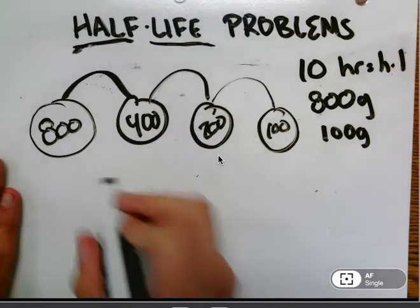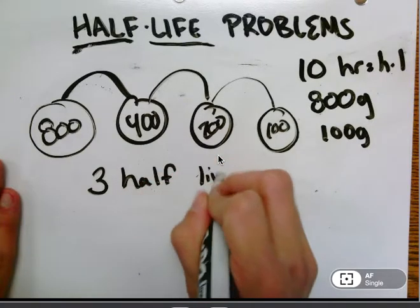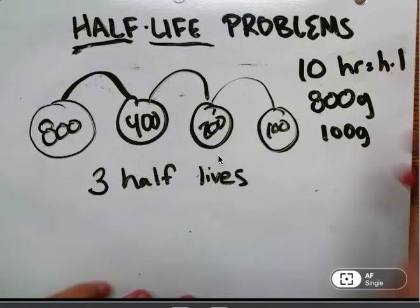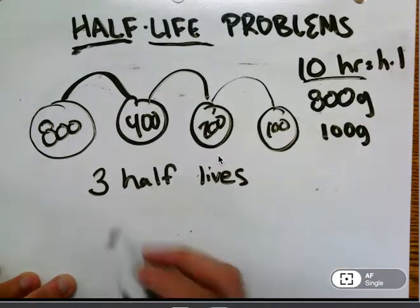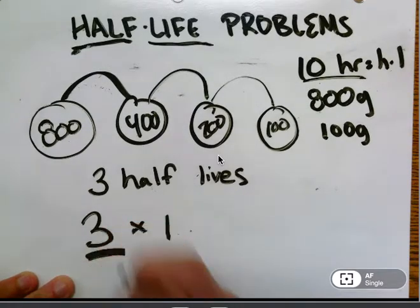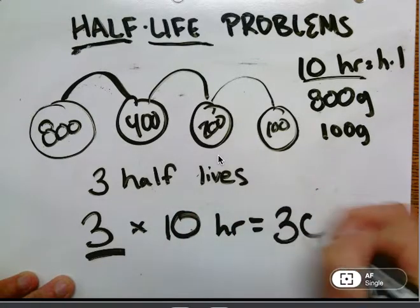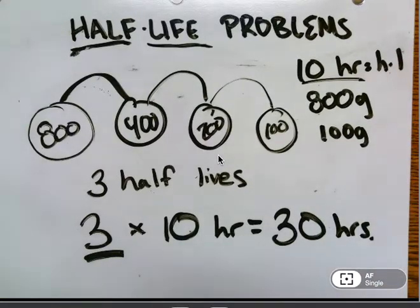This means I have three half-lives. I wanted to know the total time it takes. One half-life is equal to 10 hours, so here I'm going to use multiplication to find total time. Three half-lives times 10 hours apiece means this will take 30 hours. So there's one where you find total time.